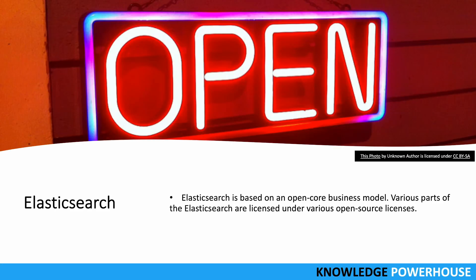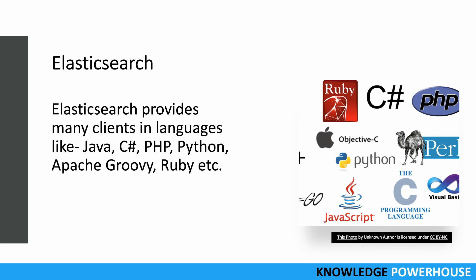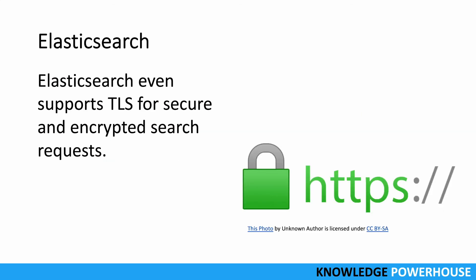Elasticsearch is based on an open-core business model, so various parts are licensed under open source licenses — you can freely use it, even for commercial purposes, with great confidence. On the extensibility side, Elasticsearch provides many client libraries in different languages such as Java, C#, and PHP, making it easier to integrate with all these languages for your search requirements. It even supports TLS — Transport Layer Security — for secure and encrypted search requests, supporting HTTPS protocol for searching on sensitive or secure data.